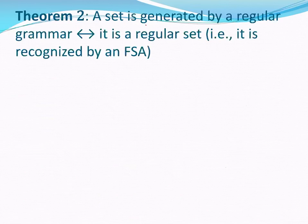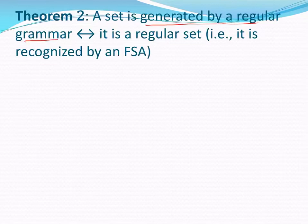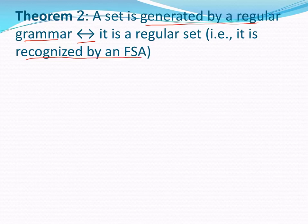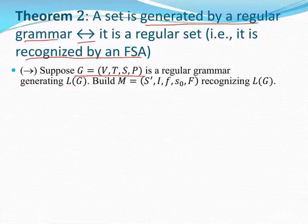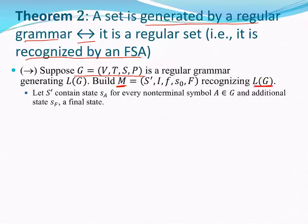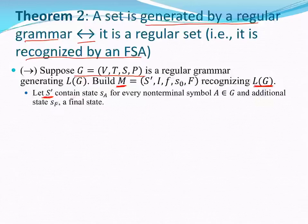Here's our theorem restated: A set is generated by a regular grammar if and only if it is recognized by a finite state automaton. We'll start with the only if portion. We will assume that we have a regular grammar G equals V, T, S, P. We're going to build a finite state automaton M that recognizes the language produced by G. We designate S prime as the set of states for our machine since S is used as the starting symbol for our grammar.